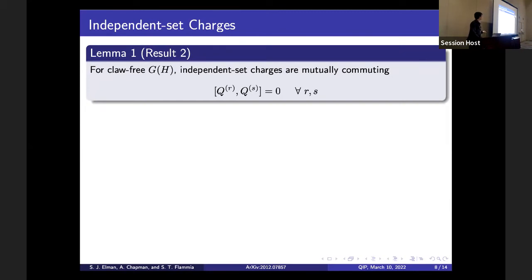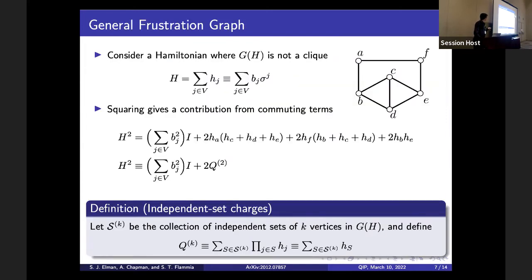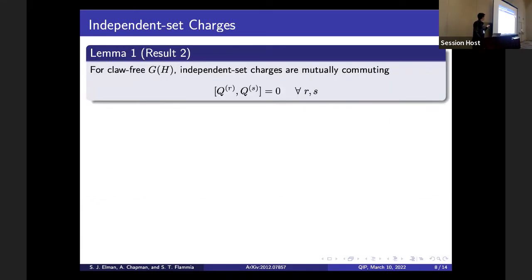This is lemma one in the paper — result two. For a claw-free frustration graph, the independent set charges themselves are mutually commuting. Q_2 commutes with the Hamiltonian because it's related by a simple difference with the identity and the Hamiltonian squared, but in general you need the promise of claw-freeness to guarantee that all the independent set charges commute with each other. Since Q_1 by definition is the Hamiltonian itself, these are all conserved.